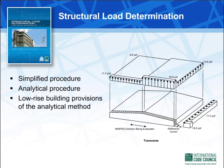In Chapter 5, wind loads are determined for the main wind force resisting system and the components and cladding of the same one-story warehouse. For comparison purposes, pressures are calculated using the simplified procedure, the analytical procedure, and the low-rise building provisions of the analytical procedure. This example clearly illustrates the main differences that can be expected between the different permissible procedures.